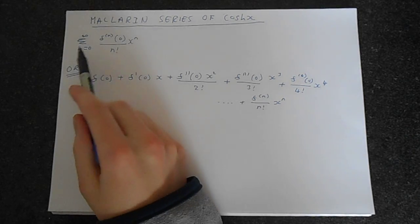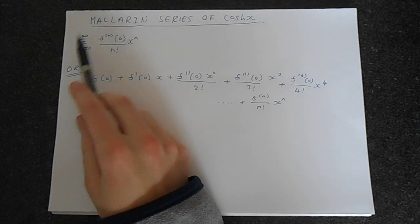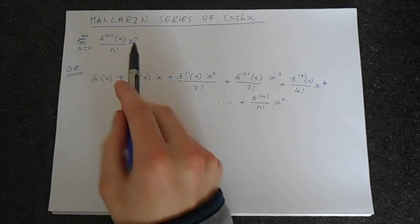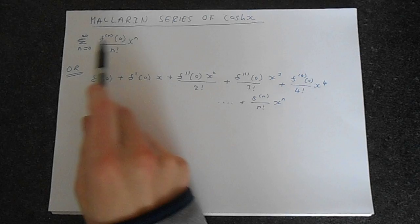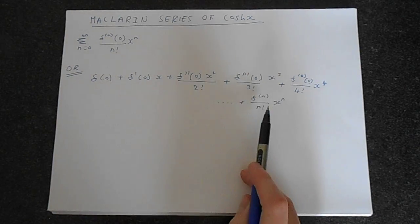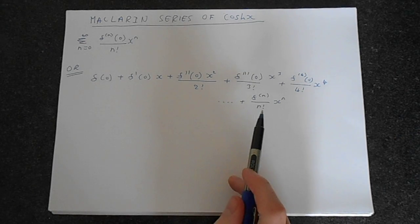This is very simple to do. We've got the basic formula for the Maclaurin series. It's the Taylor series when n equals 0, and if you expand this formula out using summation notation, you get this expansion here, and all we're going to do is fill in this.